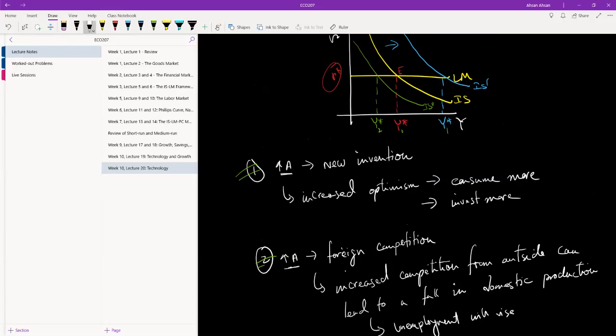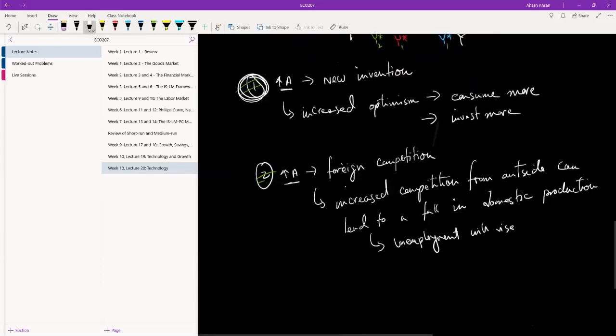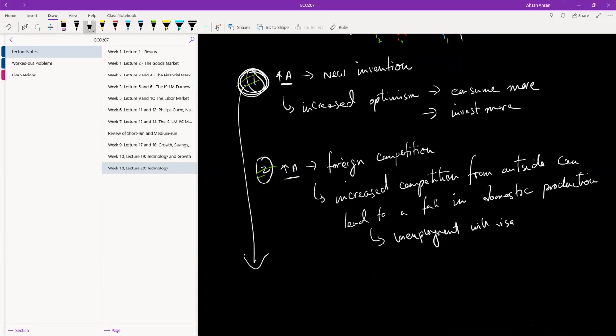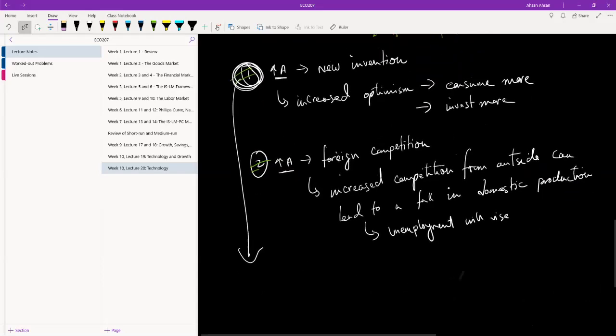Effectively, if we were to draw the diagram, this is what happens. This is where we end up. And these are just two examples that I gave. Of course there can be an infinite number of examples of how technology, how A is going up. So you see that in the short run, it's very difficult for us to say what effect will technological advancement have.